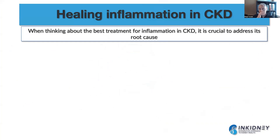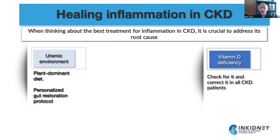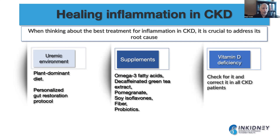So what can we do about this? We have to think about inflammation from the root cause. To address the uremic environment, you want to decrease uremic toxins by following a plant-dominant diet and a personalized gut restoration protocol. If there is vitamin D deficiency, we need to check for it and correct it. We can also use supplements such as omega-3 fatty acids, green tea extract, pomegranate, soy isoflavones, fibers, prebiotics, and probiotics — all of which have been shown to decrease inflammation in kidney disease. Optimizing the person's nutritional status is fundamental for healing inflammation in CKD.